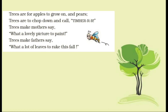Let's look at the last lines: Trees are for apples to grow on and pears. Trees are to chop down and call timber. Trees make mothers say what a lovely picture to paint. Trees make fathers say what a lot of leaves to rake this fall. The word timber means wooden piece, and rake here means plenty.